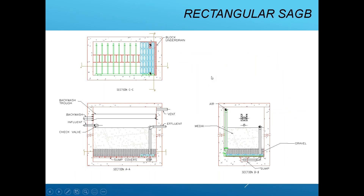This is a rectangular submerged attached growth bioreactor. During a backwash, air and a flow of returned effluent are introduced to clean the media. Solids accumulated in the filter gravity flow into the backwash trough, then gravity feed back to the anoxic tank at the beginning of the system. At the bottom, a system of air lines and block under drain provides a nice, even air flow pattern through the entire reactor.